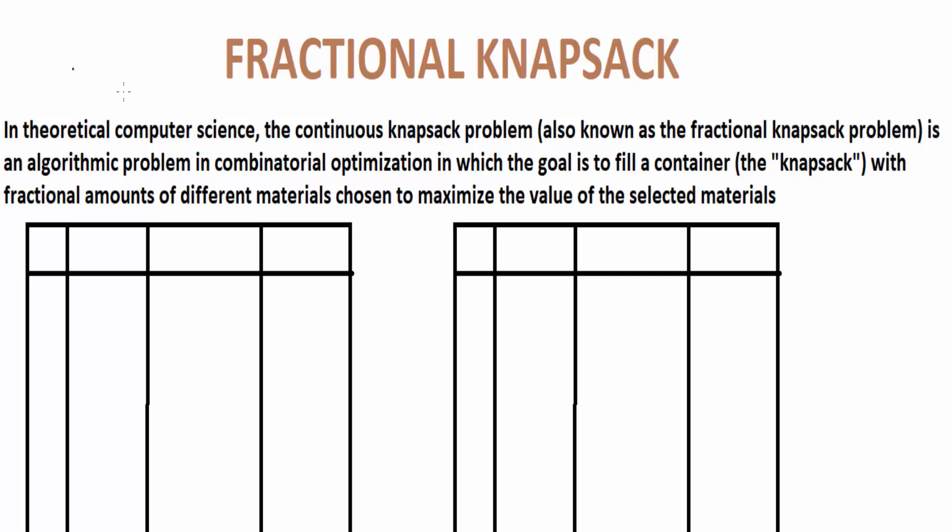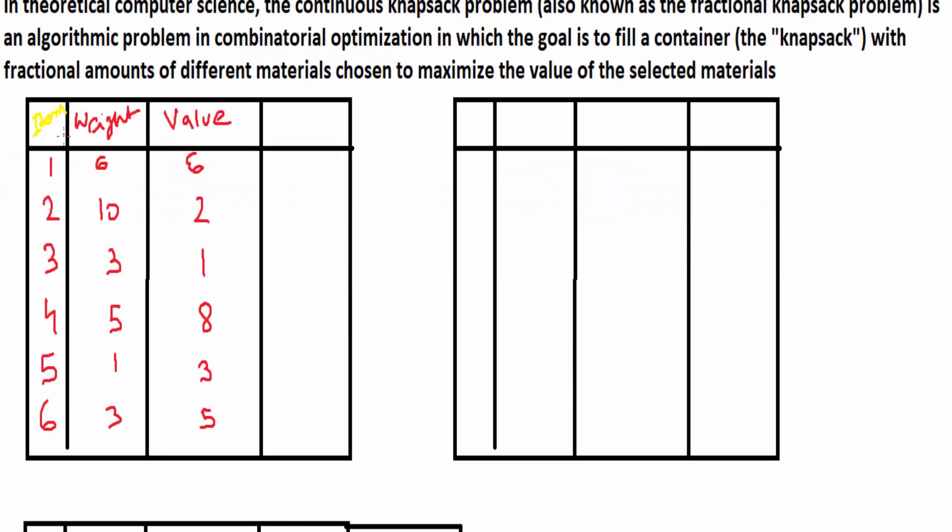First I'll write here item. We can see that the item number, the weight and its corresponding value is given. Now you need to calculate the density. Density is something we need to calculate. Density equals, this is the formula, value by weight.